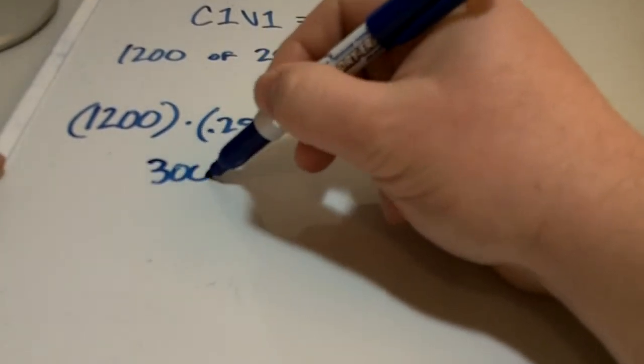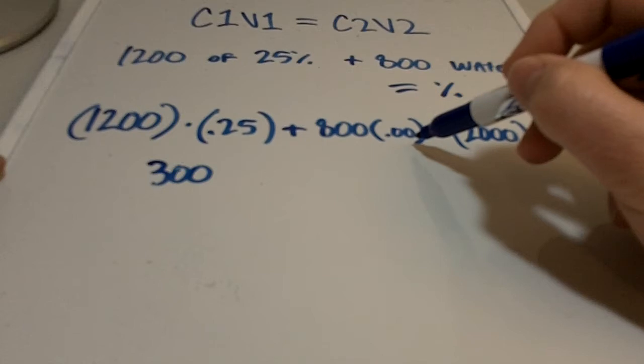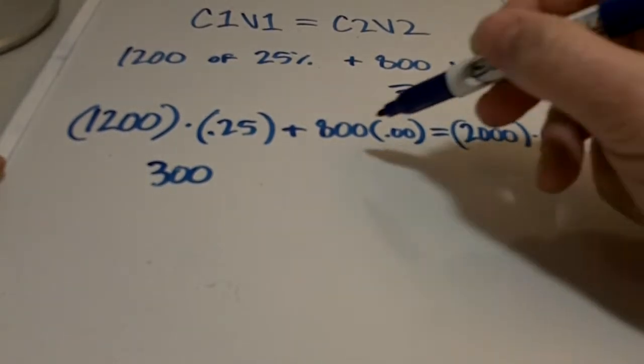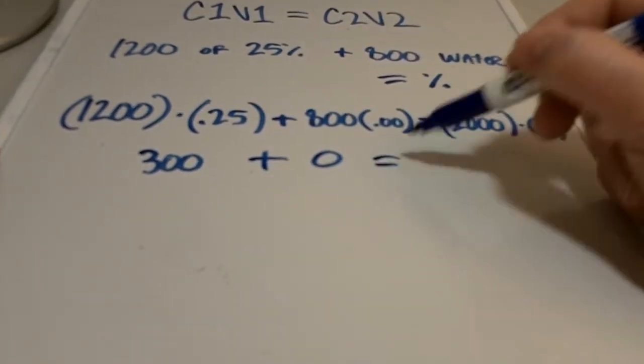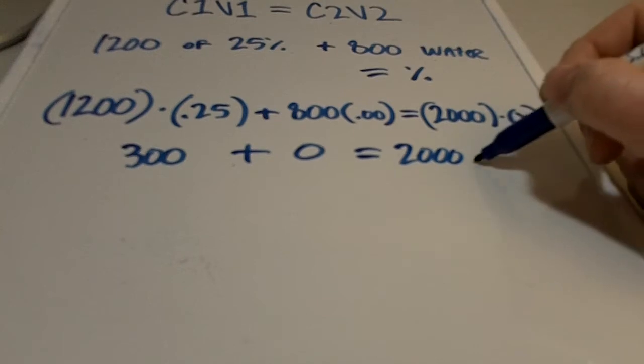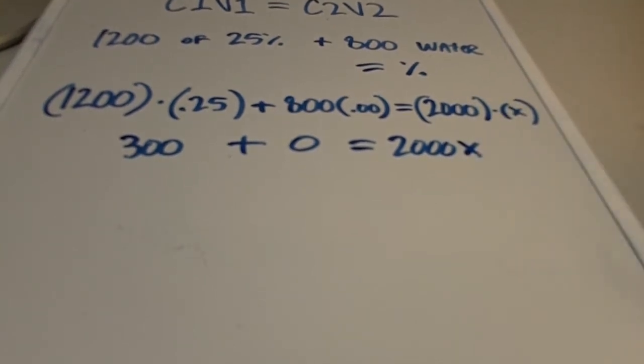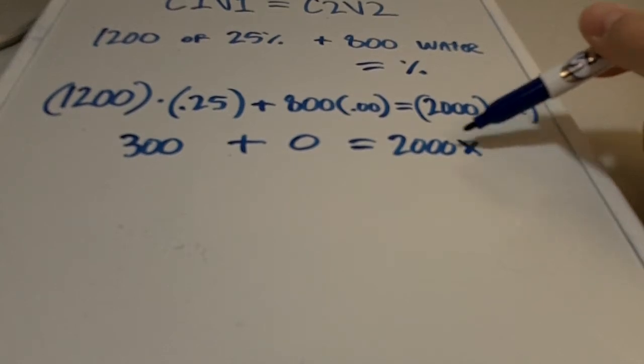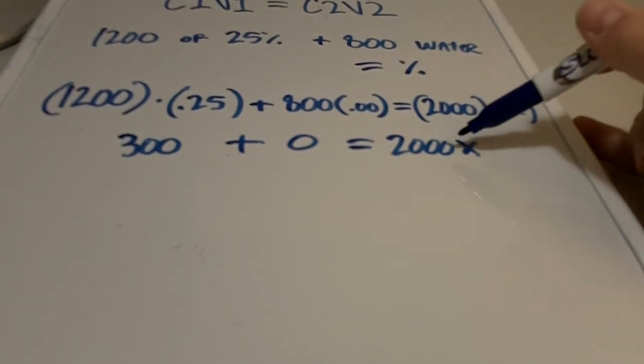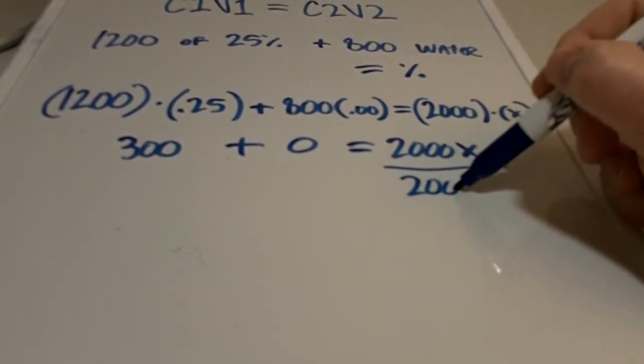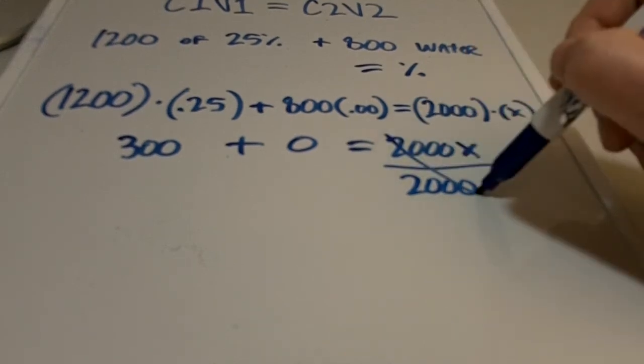So we know we're going to have 2000 milliliters. But we don't know what, so that's going to be our unknown, our x. Okay, so then we go ahead and do our multiplication. 1200 times 0.25 equals 300. 800 times 0 is 0, since anything times 0 is 0. So that's 0. And this is going to equal 2000x. And so there again, if we want to isolate this x, we need to divide this side by 2000.